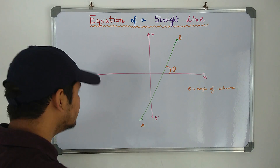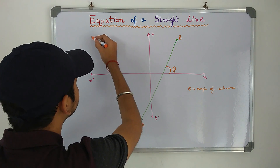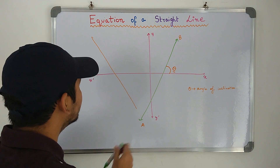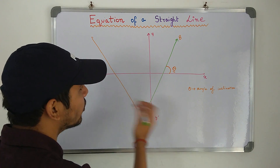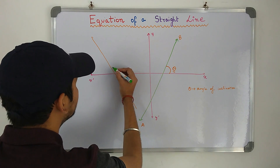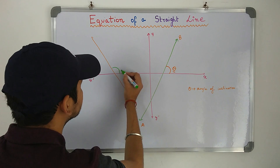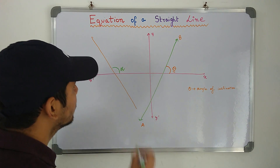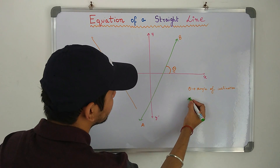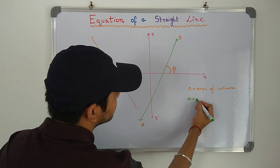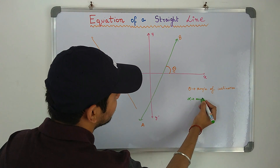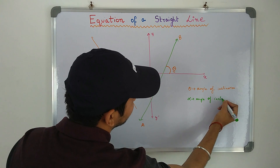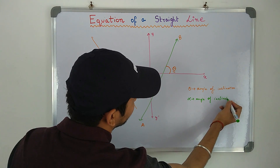Now take another line. This line is also making an angle with the positive side of the x-axis — call it alpha. So over here, alpha is the angle of inclination.